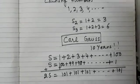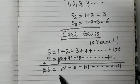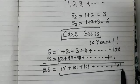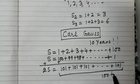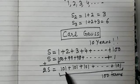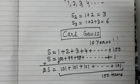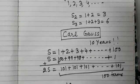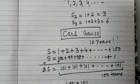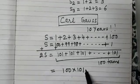And how many such terms are there? Observe. These are 100 terms. 101 plus 101. How many times? 100 times. So what will be the sum? That is 100 into 101. 100 into 101.